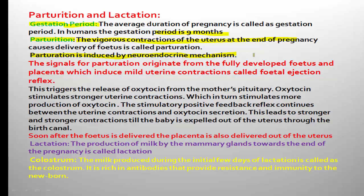At the time of parturition, the uterus undergoes vigorous contraction. Remember the layers of the uterus: perimetrium is the outer layer, myometrium is the middle layer, and endometrium is the inner layer.